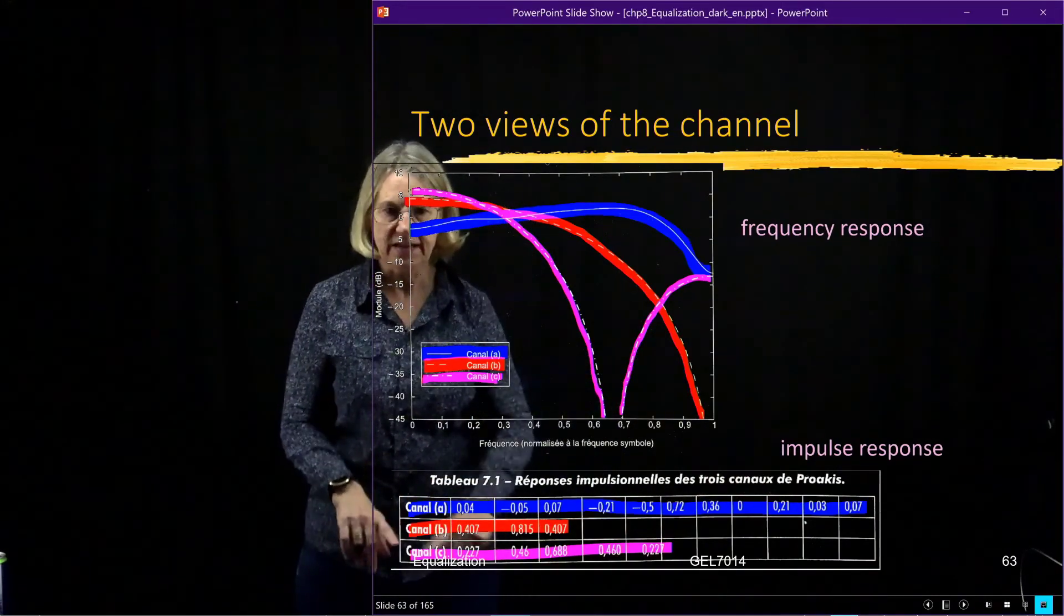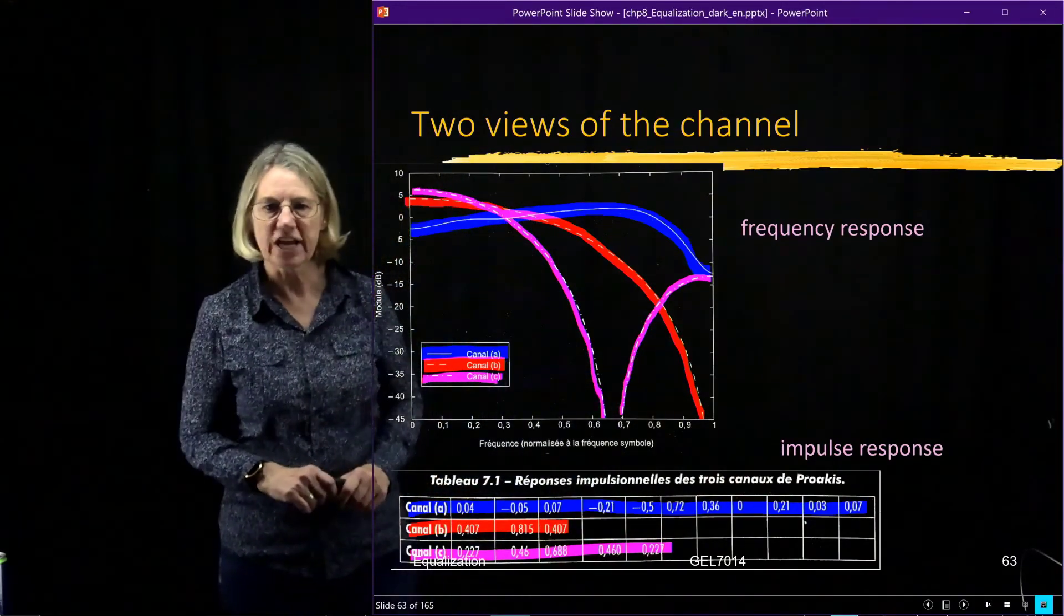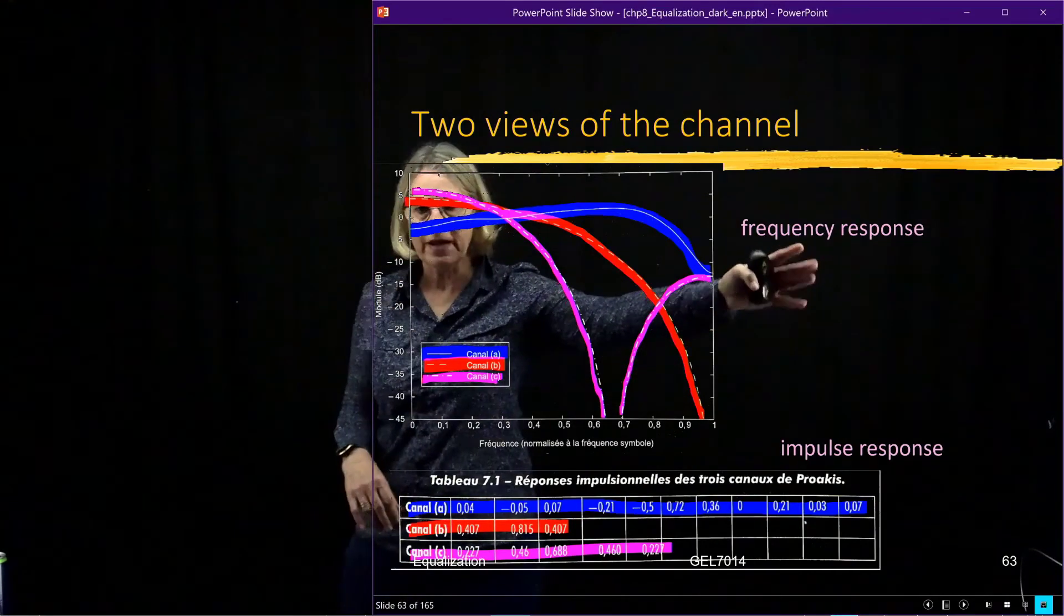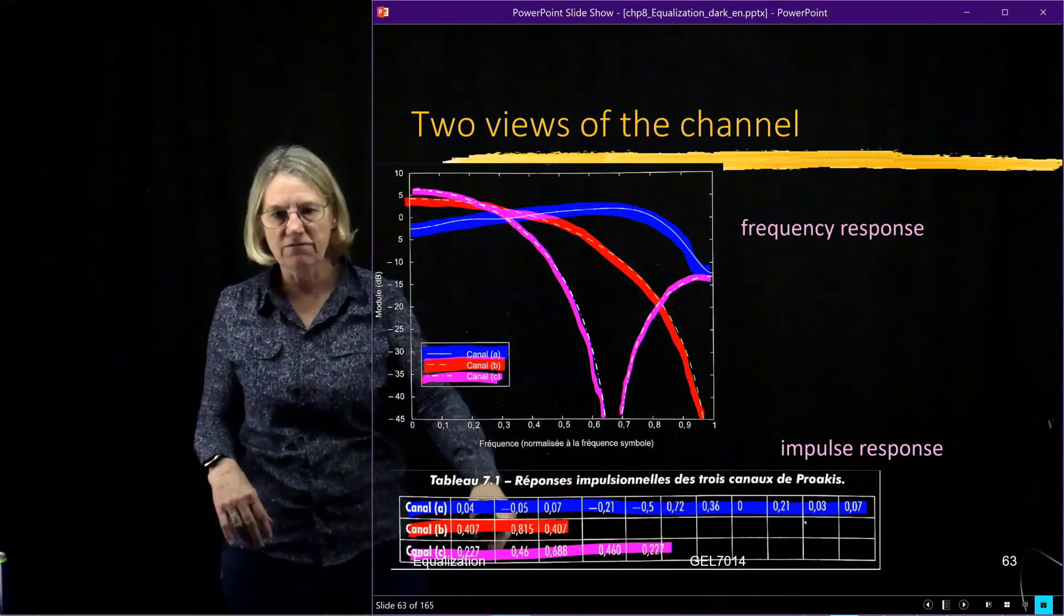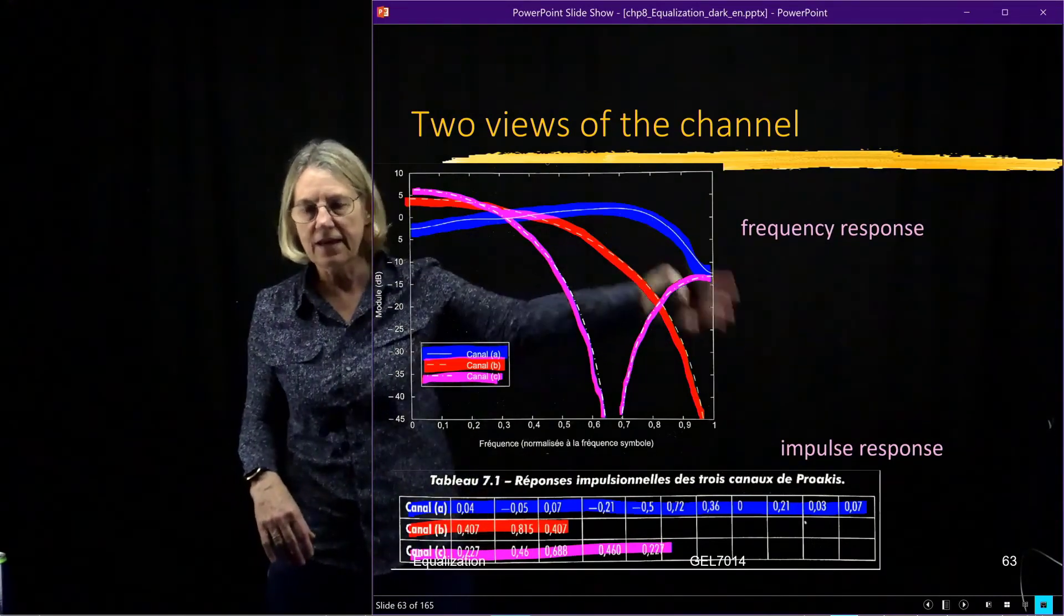I've got the impulse responses, the number of taps on each one of this tap delay line model of the channel, and then I have plotted up here the frequency response. I just go into MATLAB, take all these coefficients, and plot the FFT of them.